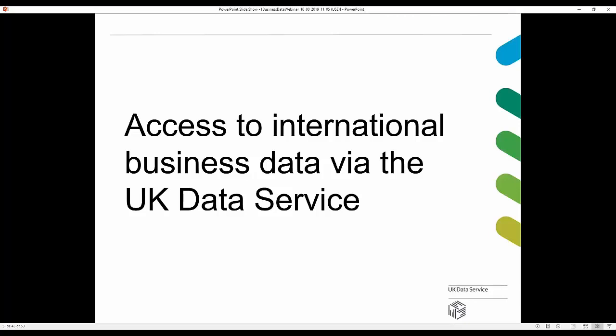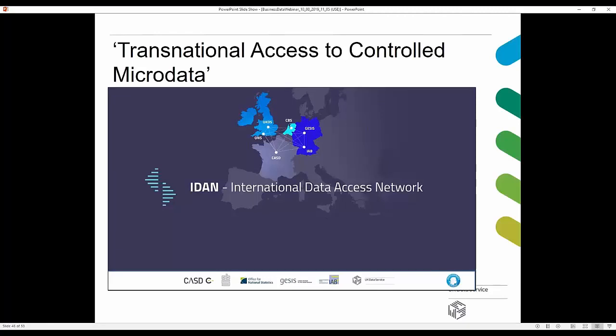Hello, good afternoon. I'm very glad to say that the UK Data Service is part of the International Data Access Network project, short IDIN, founded in 2018. The project is a collaboration between six research data centres from France, Germany, the Netherlands, and the United Kingdom to facilitate research use of controlled access data. At the moment, we have two access points to international controlled data in our safe room at the University of Essex: one to the German Institute for Employment Research data — the IAB — and one to the French CASD data.